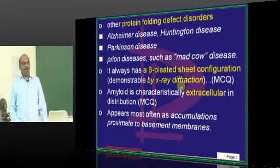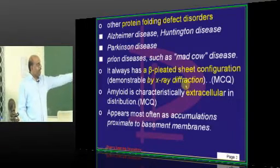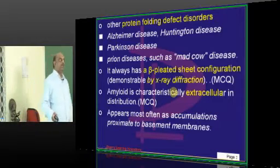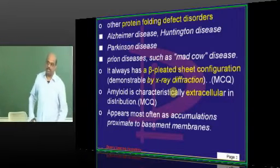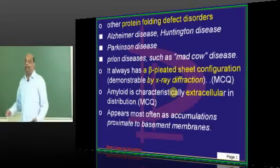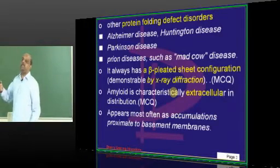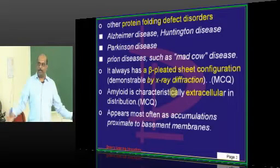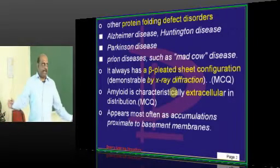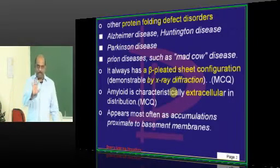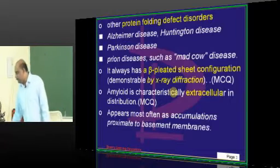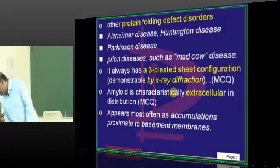If you look at amyloid by X-ray diffraction, the typical proteinaceous structure is a beta pleated sheet configuration, which is common to any type of amyloid — AL type, AA type — any amyloid ultimately has a beta pleated sheet structure.